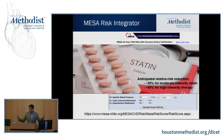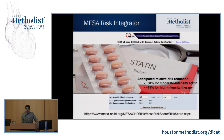There are calculators where you can take the pooled cohort equation and modify it with the addition of the coronary artery calcium score. With a calcium score of 360, our patient's risk went from 4.9% to 9%, now meeting the criteria for statin therapy. I put this patient on statin therapy with the hope of anticipated risk reduction.